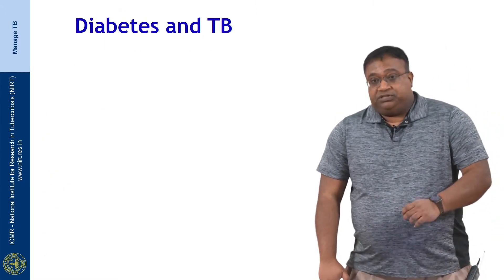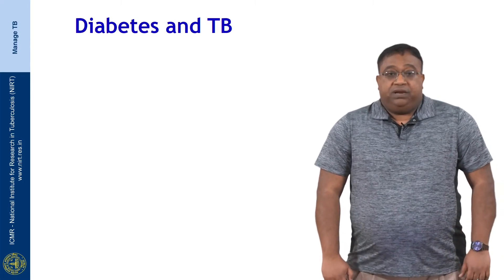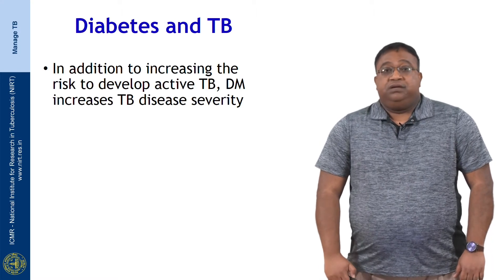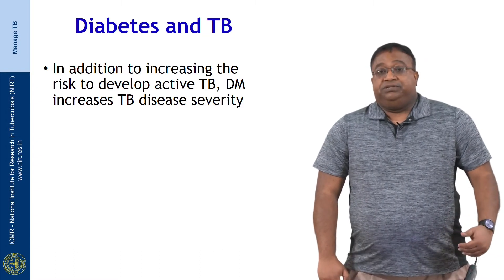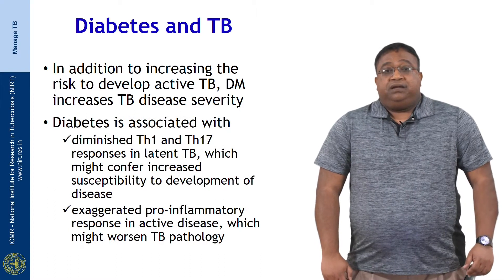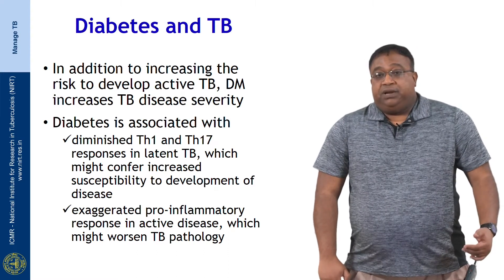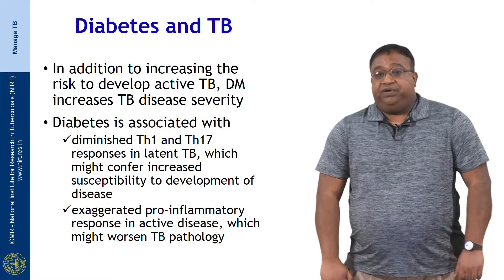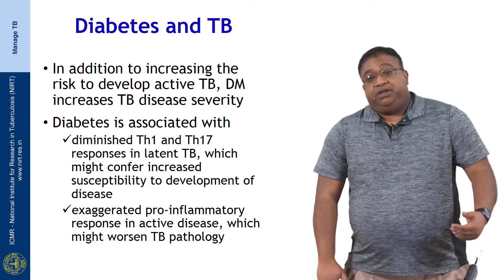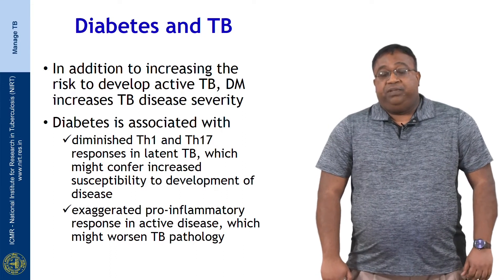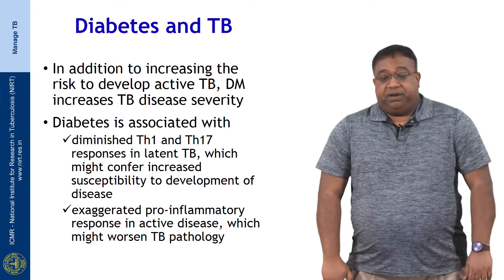Diabetes is commonly associated with an increased risk for TB. In addition to increasing the risk of developing active TB, diabetes mellitus also increases TB disease severity. Diabetes is typically associated with diminished TH1 and TH17 protein responses in latent TB infection, which might confer increased susceptibility to development of disease. It is also associated with exaggerated pro-inflammatory responses in active disease, which might worsen TB pathology in those with pulmonary tuberculosis.